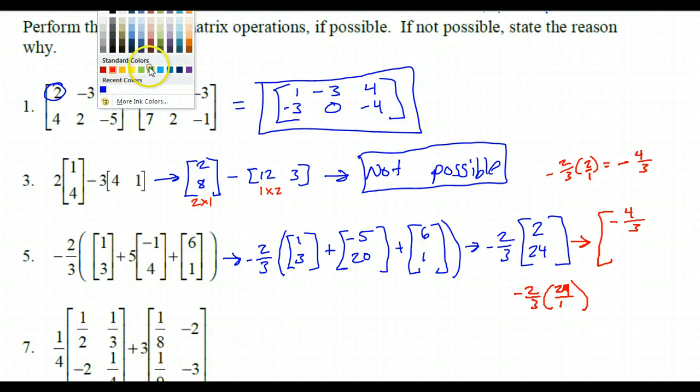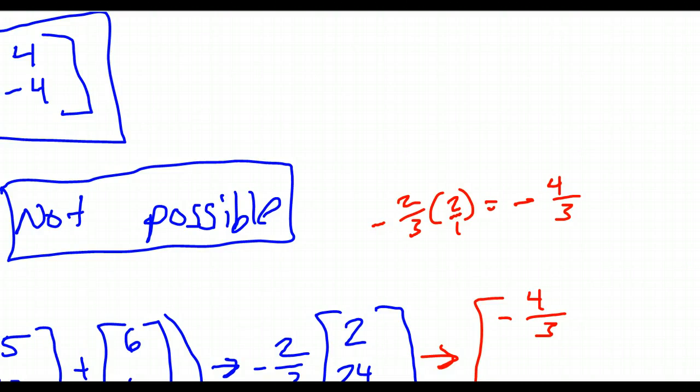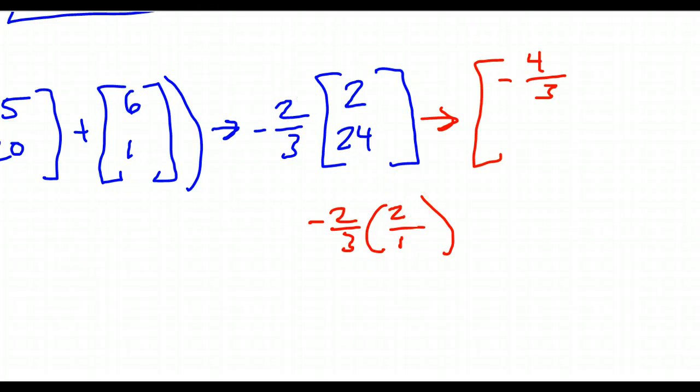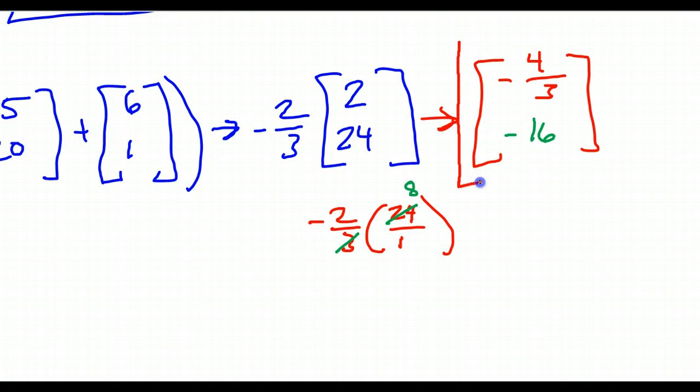If I do negative 2 thirds times 2, that's like 2 over 1. So this is going to be 2 times 2 is 4, and 3 times 1 is 3, so that's negative 4 over 3. Now the bottom one, if I do negative 2 over 3 times 24, that's like 24 over 1. 3 goes into 24 8 times, so that just leaves negative 2 times 8, which is negative 16.